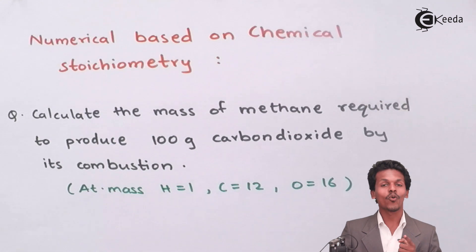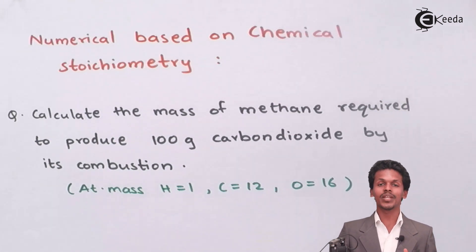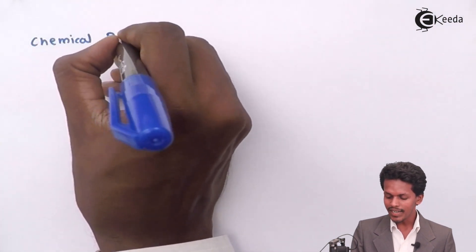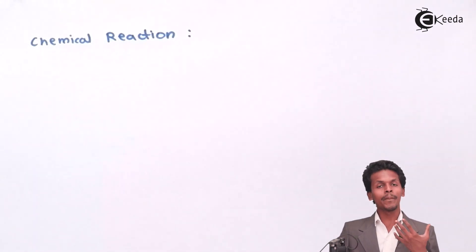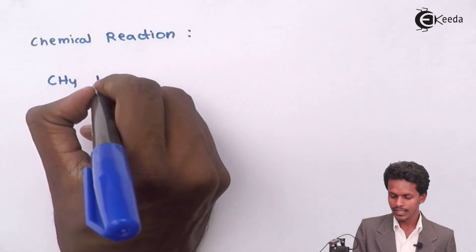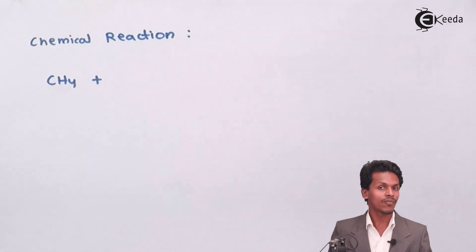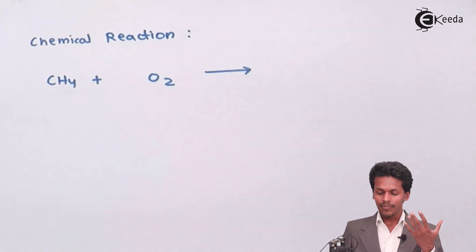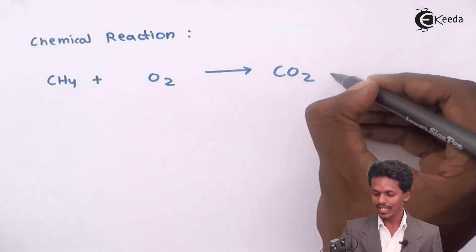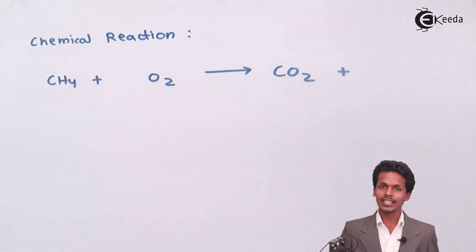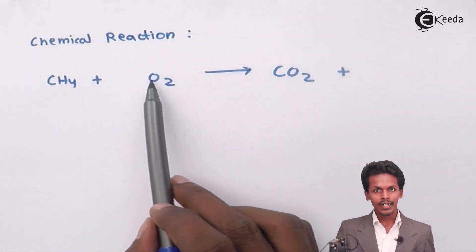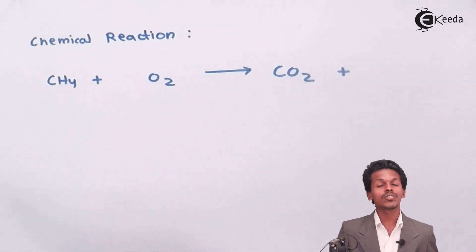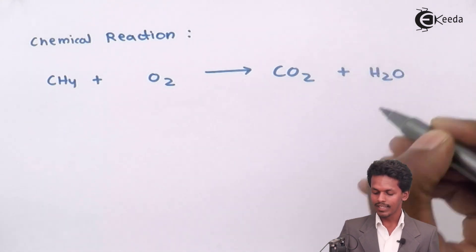First, we should know the reaction. I am going to represent the reaction for the combustion of methane. The chemical reaction can be represented as: methane (CH4) undergoes combustion, meaning it reacts with oxygen (O2) on the reactant side. We obtain carbon dioxide (CO2) as a product. But it is not only carbon dioxide — the hydrogen in methane will also be liberated in the form of water (H2O).